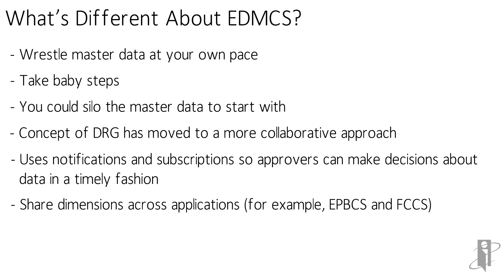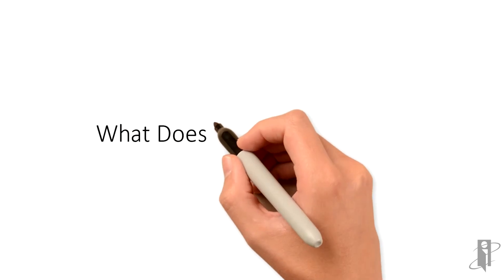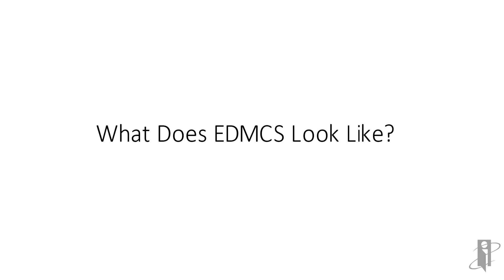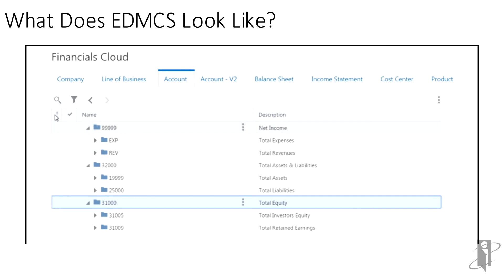EDM-CS also allows sharing dimensions across applications. Oracle has created EDM-CS with a new code base — in other words, it's not your mama's DRM. The user experience is consistent with Oracle Cloud products. In this screenshot, on the left side, EDM-CS is tracking changes made to a hierarchy. In the right pane are the members or nodes of the hierarchy. There is also visualization on screen showing the members or nodes that have been changed or touched. Note that once we are in a dimension, the tabs become the other dimensions available to edit or update.